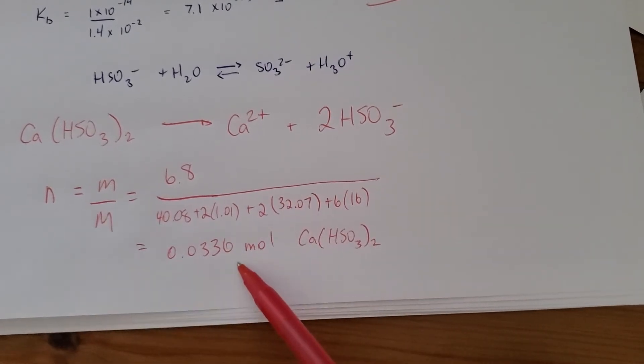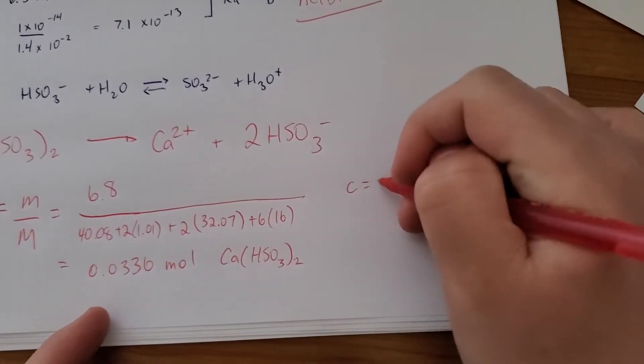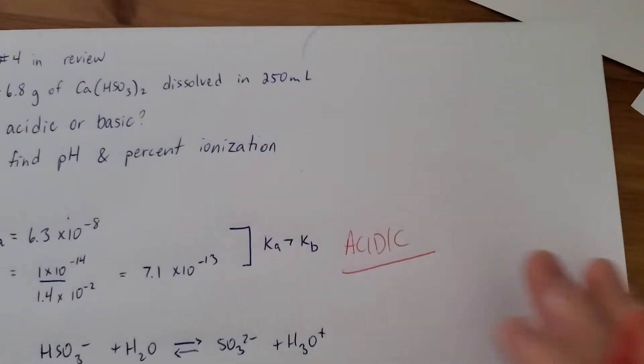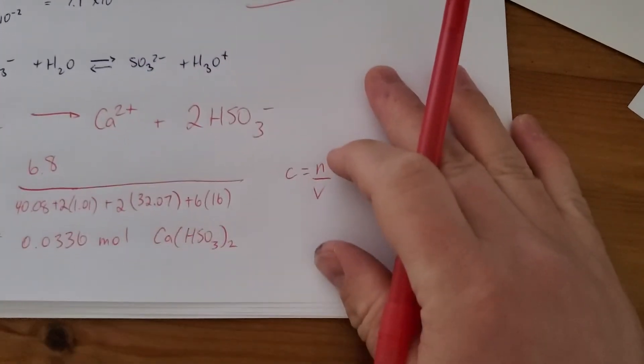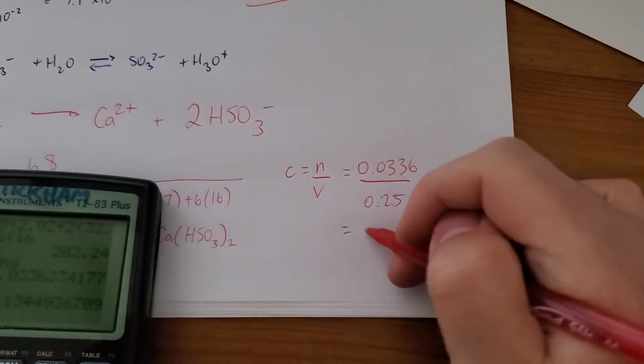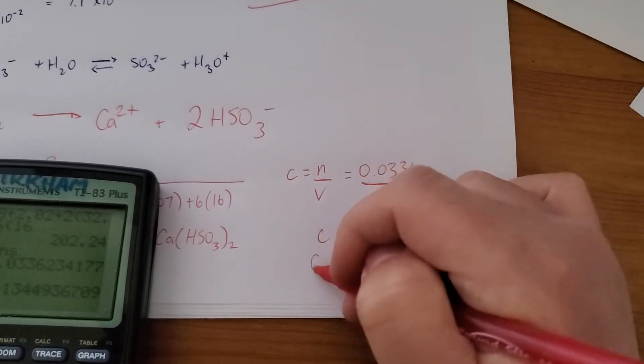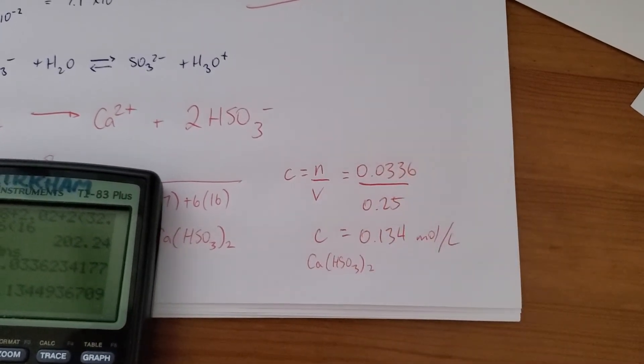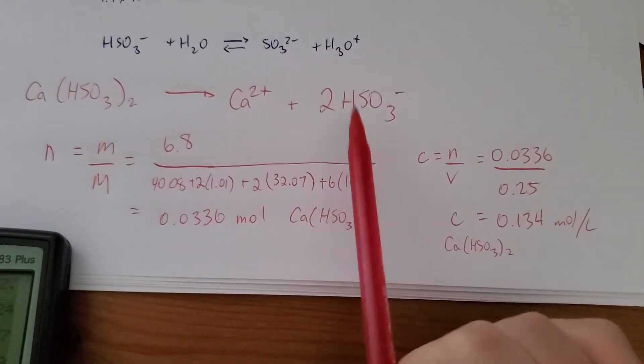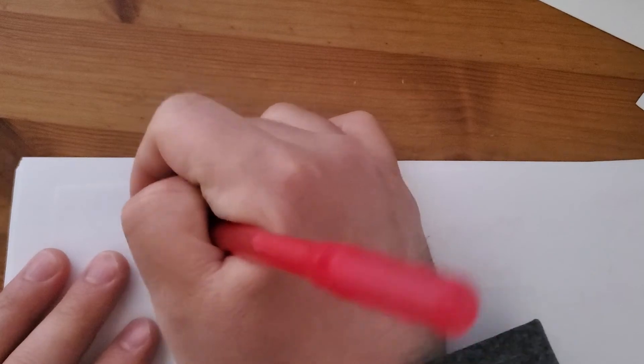All right, so the number of moles of hydrogen sulfite will be double that. You can double it now or you can double it after you find the concentration. Maybe I'll do the concentration first. So the concentration of calcium hydrogen sulfite, we take this value that we just found, divide it by the volume of water, which was 250 mils. So this is for calcium hydrogen sulfite. But, we have two hydrogen sulfites for every one of these. So the concentration of hydrogen sulfite, which is what we actually want, is going to be double that.